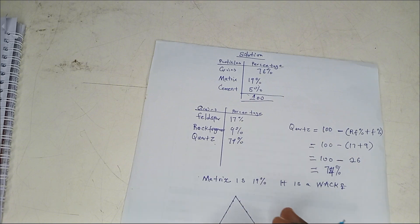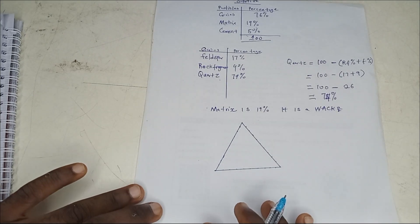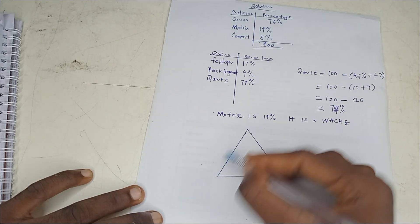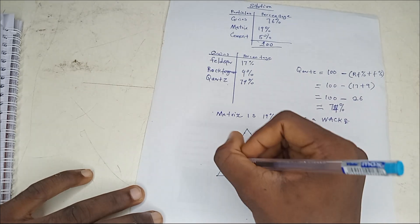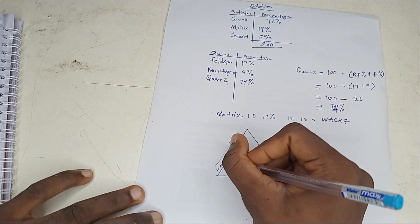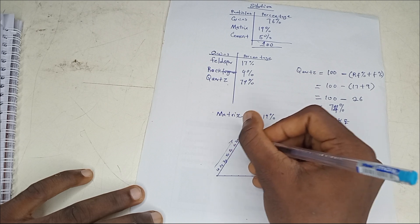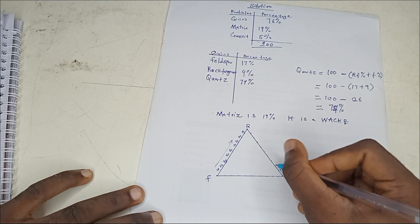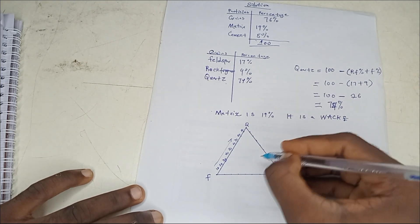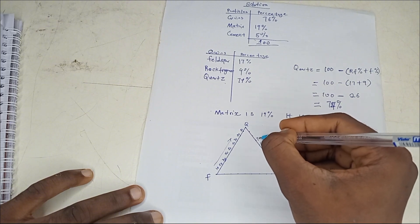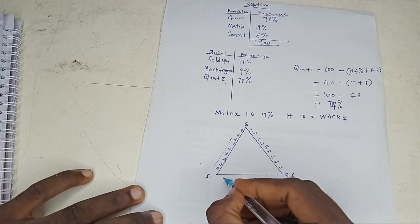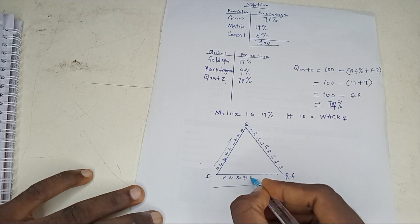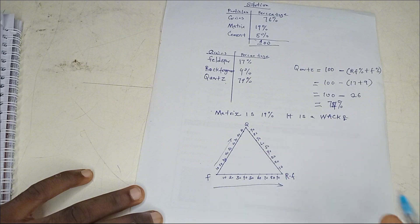I'm doing increasing quartz on this side: 10, 20, 30, 40, 50, 60, 70, 80, 90, 100. This is Q, F, RF at the corners. On this side, you can choose either increasing feldspar or increasing rock fragments: 10, 20, 30, 40, 50, 60, 70, 80, 90.